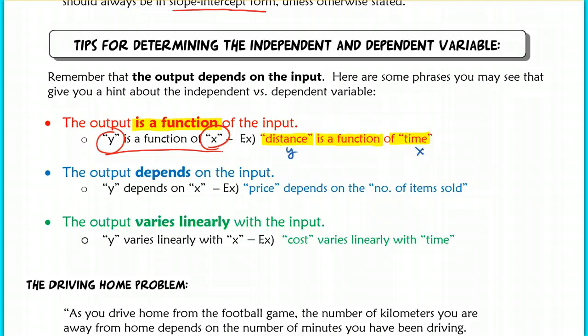You might also see the phrase that the output depends on the input. Obviously, this is pretty straightforward. They're just straight up telling you, hey, this is going to be depending on this. So, price depends on the number of items sold. So, price represents the dependent variable because it depends on this, the number of items sold. So, that would be my input, the x.